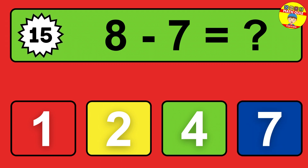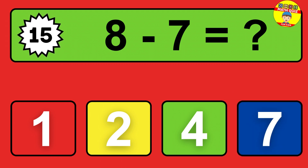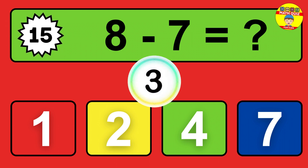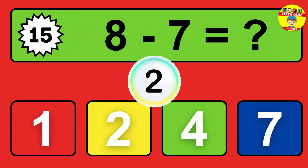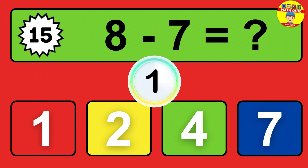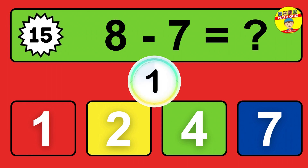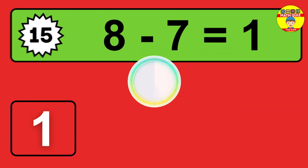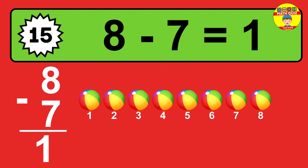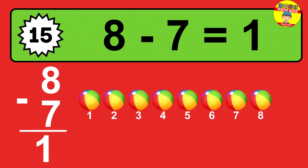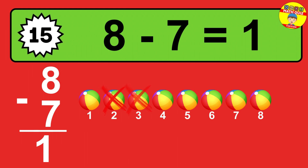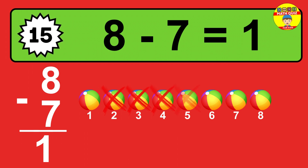Question 15. 8 minus 7 equals what? So the answer is 8 minus 7 is 1. Let's count it. 1.